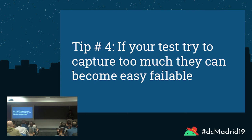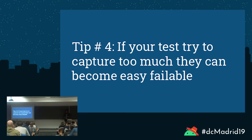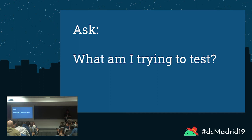Tip number four: if your tests try to capture too much, they become easily failable. While writing tests, one question to always ask is — is there a purpose in automating this? If you're trying to put too many things inside a test, you're going to have a hard time debugging when something goes wrong. The same principle applies as for unit tests — don't put too much into a single test. As test engineers, we always have a test step and an expected result — that principle should carry over to automated tests as well. Simply ask: what am I trying to test?